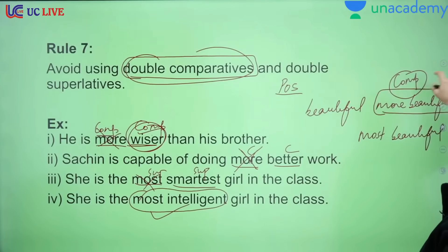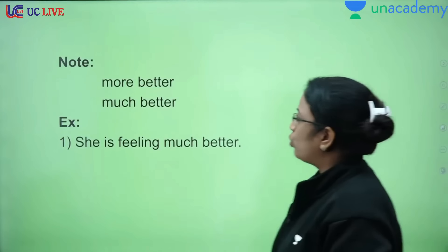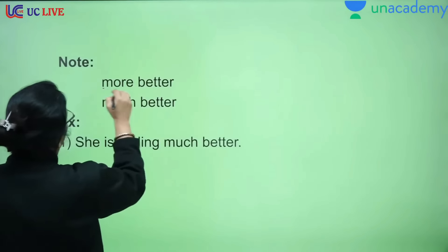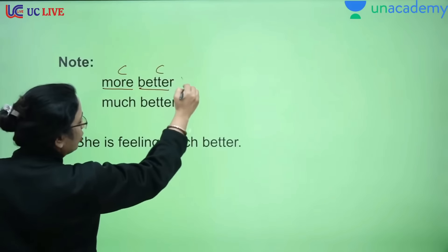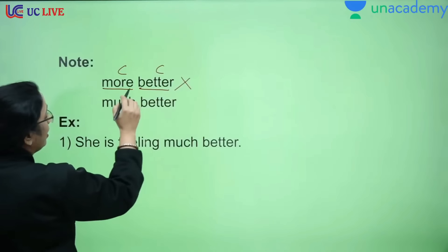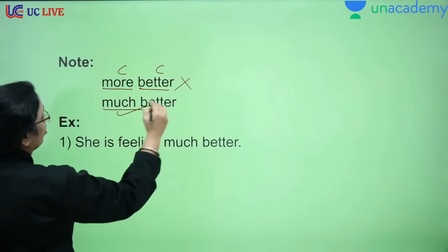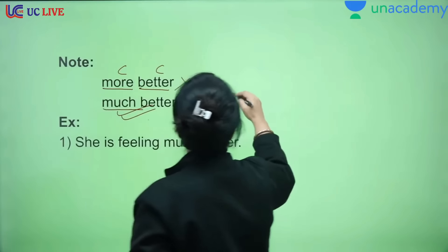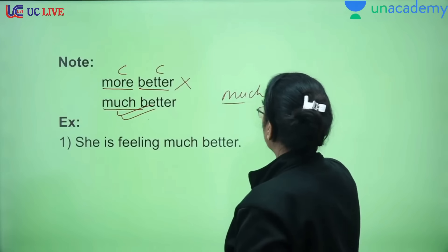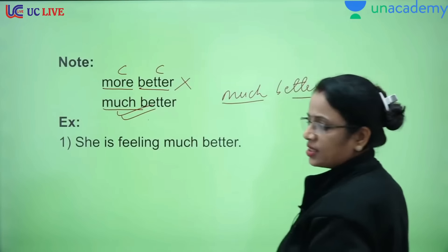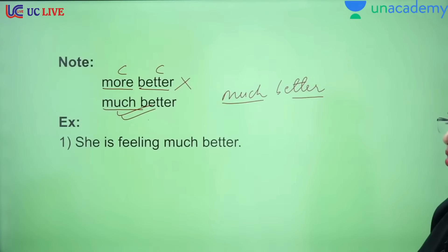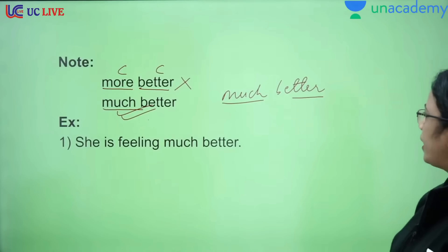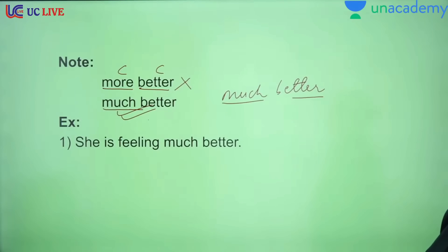Remember to keep this rule — it comes in exams. 'More' is comparative and 'better' is also comparative, so 'more better' is incorrect. However, 'much better' is correct. Why? Because 'much' is positive degree, not comparative. One positive and one comparative can come together. So 'much better' is acceptable, but 'more better' is not.